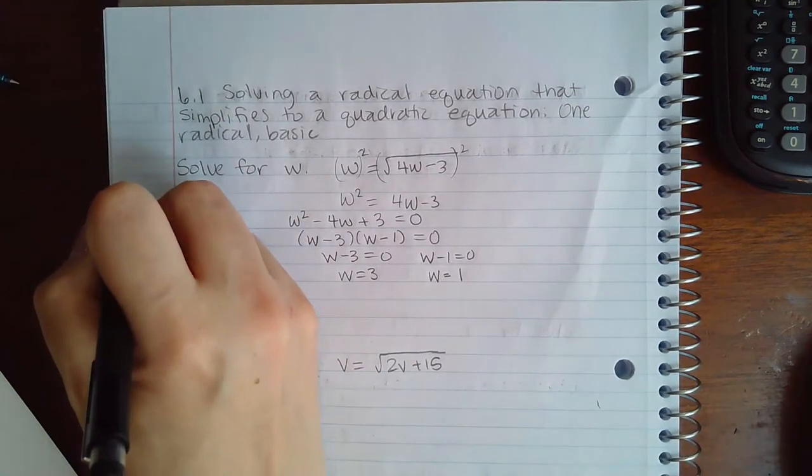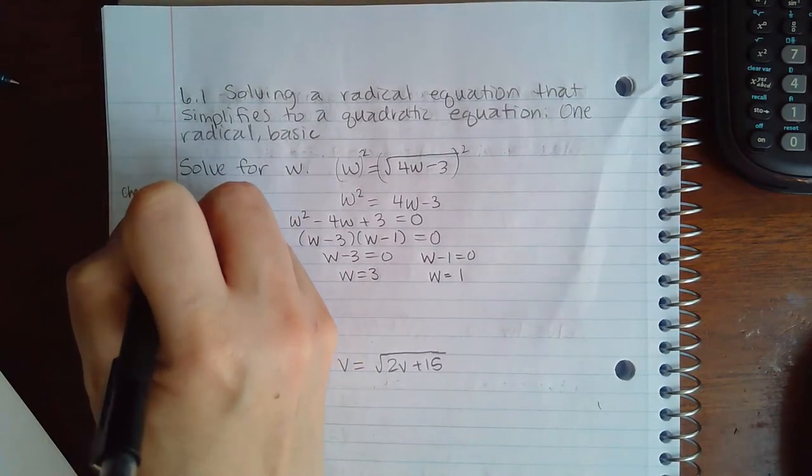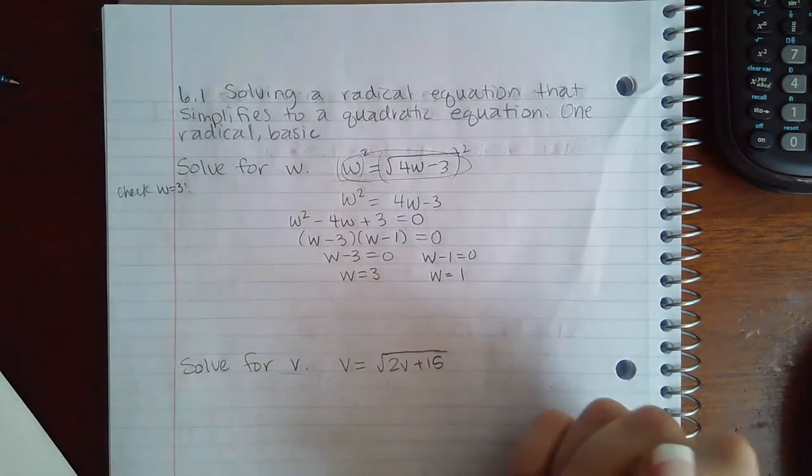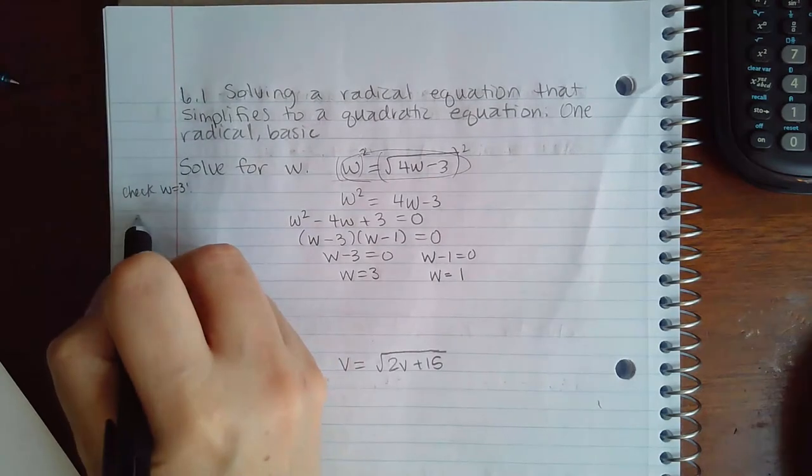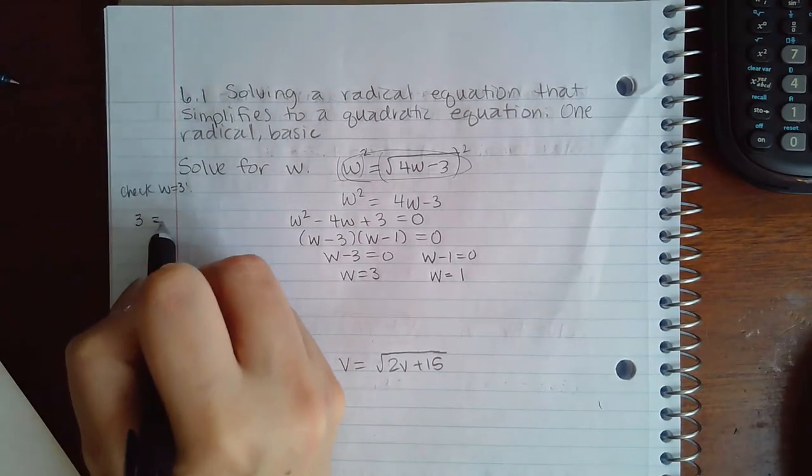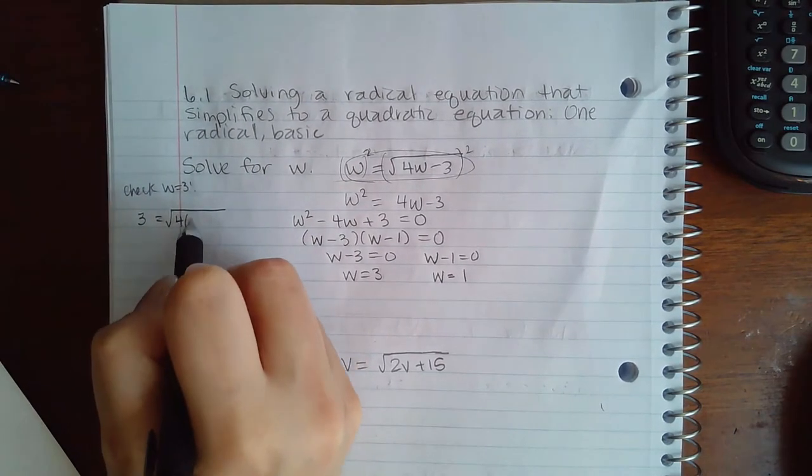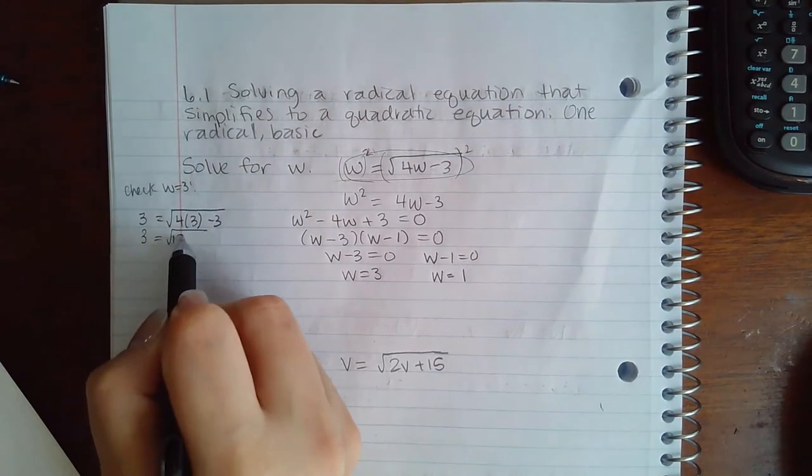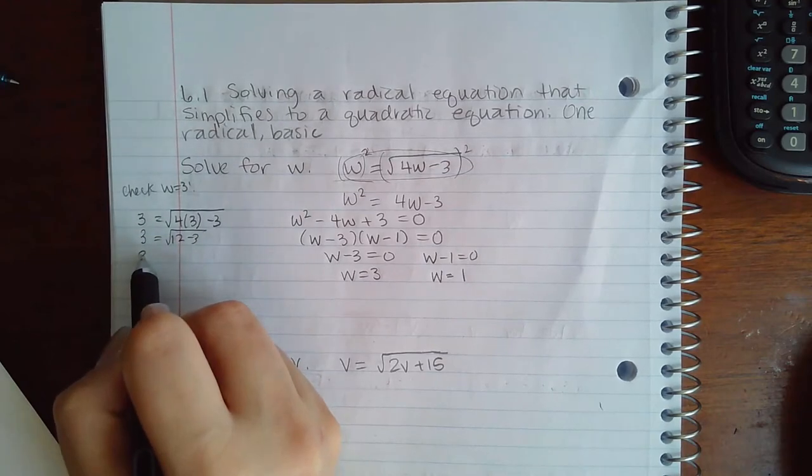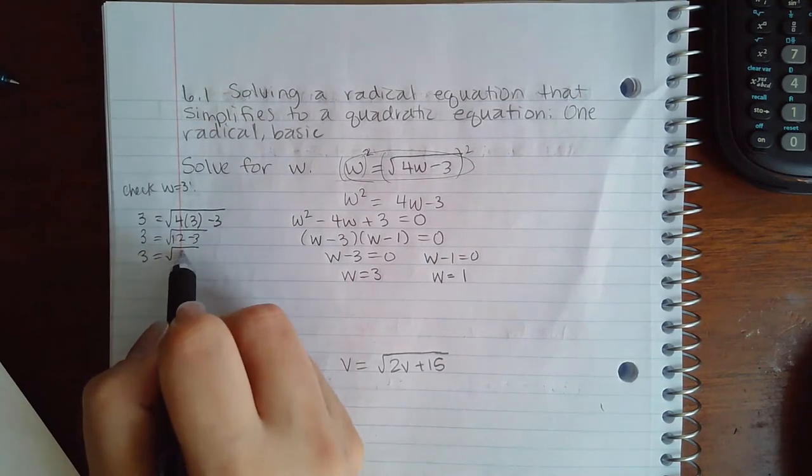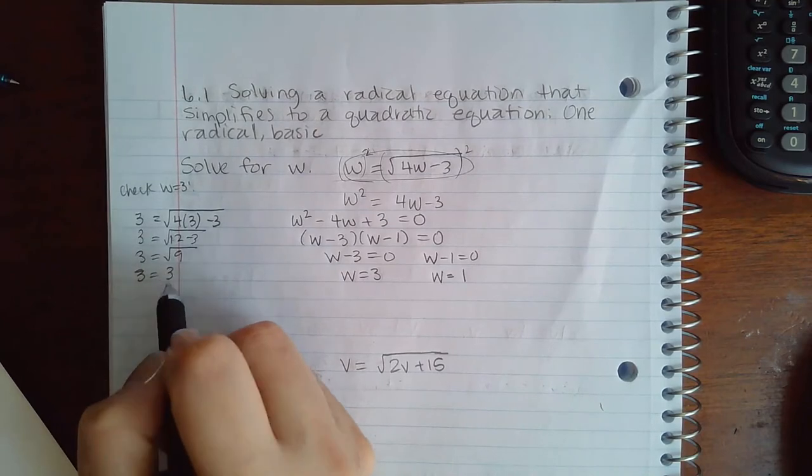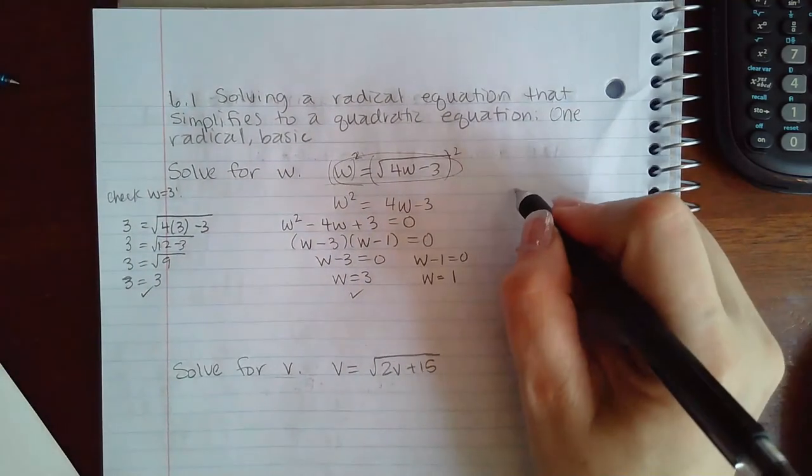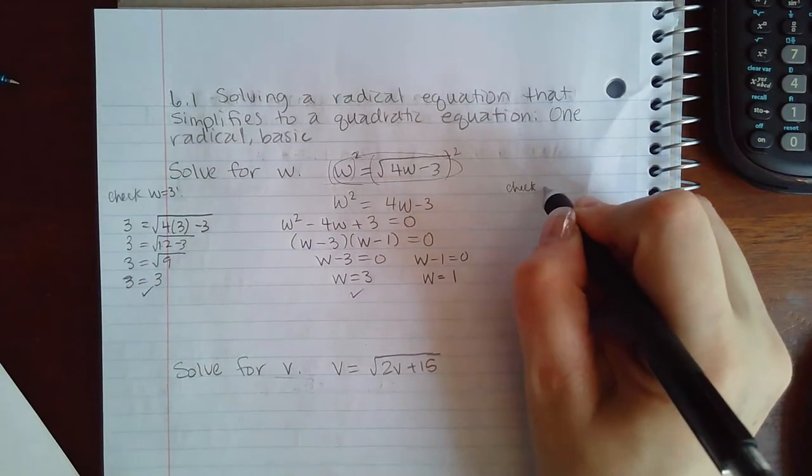Now we have to check those answers. So first I'm going to check is w equal to 3, so I'm going to plug it into the original problem before I started squaring things. So my w value, square root of 4 times my w value minus 3, so that's 12. 12 minus 3 is 9, and the square root of 9 is 3. So this one does check out.